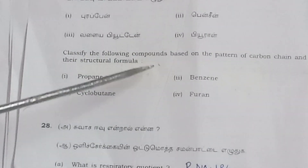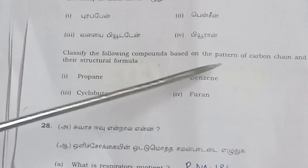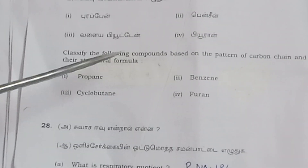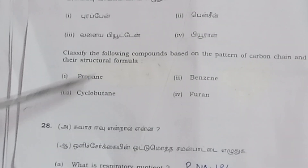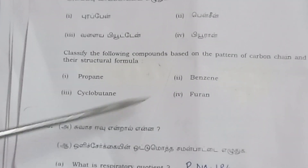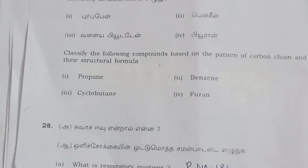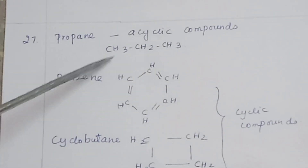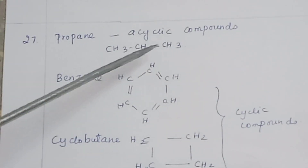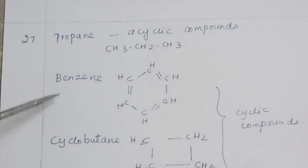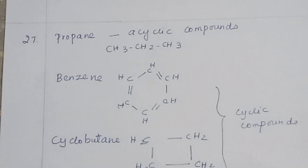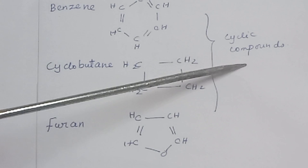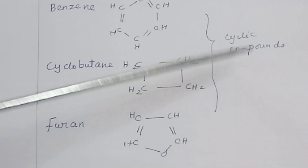Question 27: Classify the following compounds based on the pattern of carbon chain and give the structural formula. Propane: acyclic compound — CH3–CH2–CH3. Benzene, cyclobutane, and furan are cyclic compounds.